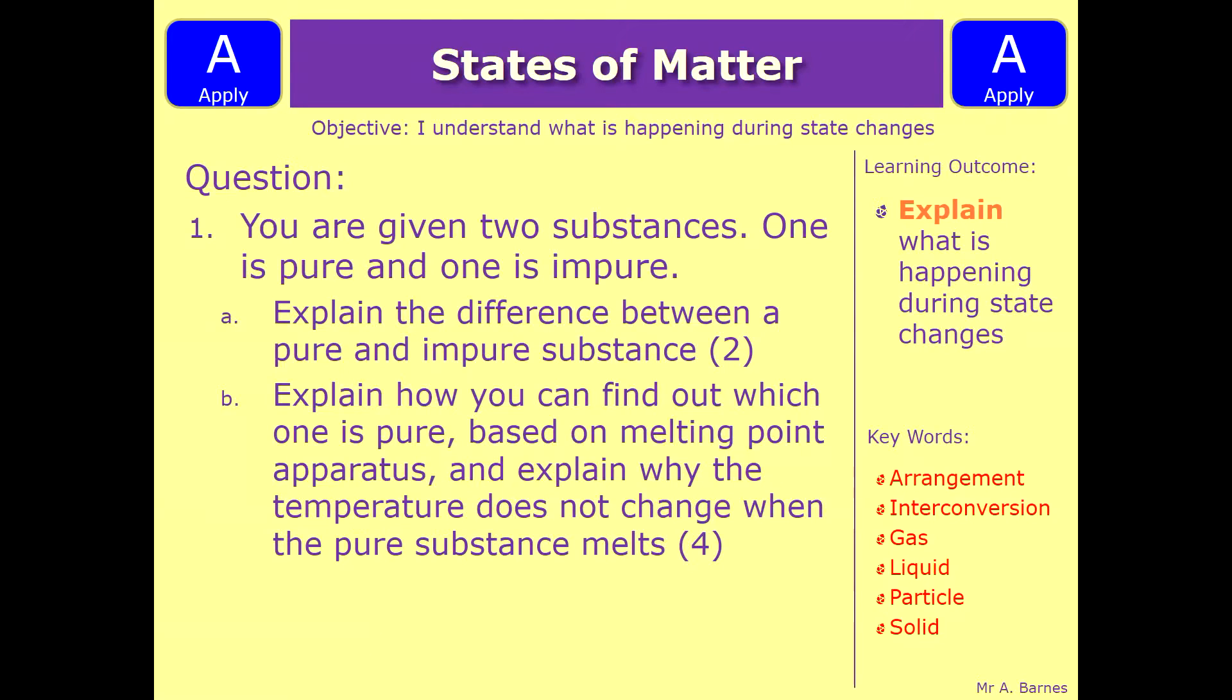Let's have a look at a couple of questions then. You might get given something like this in an exam which says you are given two substances, one is pure and one is impure. Explain the difference between a pure and impure substance for two marks, and then explain how you can find out which one is pure based on melting point apparatus, and explain why the temperature does not change when the pure substance melts. I'd like you to pause the video and have a go at answering the questions.